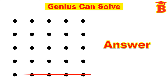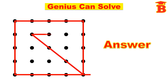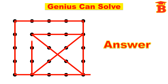We start from here. This is the first line, this is the second line, this is the third line, this is the fourth line, then fifth line, then sixth line, then seventh line, and finally this is the eighth line. Now we have connected all the 25 dots using 8 straight lines continuously.